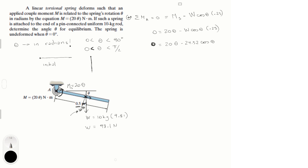So we have the equation 20θ − 24.52 cos(θ) = 0. With this formula we have one variable and we need to solve for theta. But it's not that simple because we have a trigonometric function, cosine of theta, and theta by itself. For this we're going to use what is called Newton's method of approximation — and I know it sounds intimidating, but don't let it. It's super easy to use.